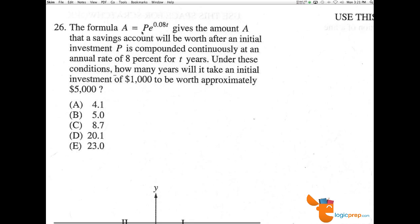Number 26, the formula A equals P times E to the 0.08T gives the amount A that a savings account will be worth after initial investment P is compounded continuously at an annual rate of 8% for T years. Under these conditions, how many years will it take an initial investment of $1,000 to be worth approximately $5,000?